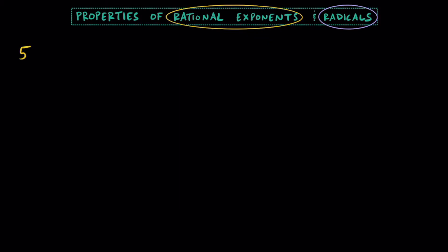Let's say we have the expression of 5 to the 3 halves power, and we're going to multiply that by 5 to the 1 half power. If we want to keep this problem in exponential form, that's perfectly fine. Since we have matching bases here, we can just go ahead and write the exponents as the sum of their exponents. So, 3 halves plus 1 half. If we add those two fractions together, 3 halves plus 1 half is going to be 4 halves, or that's going to equal 2, and then 5 to the 2nd power, 5 squared, is equal to 25.